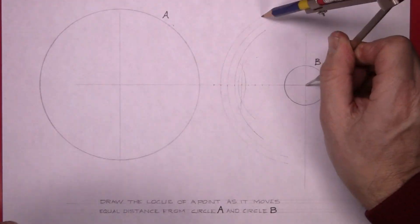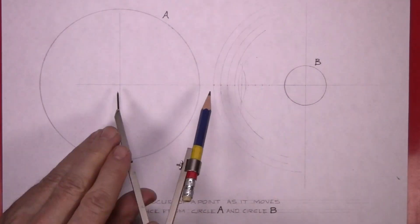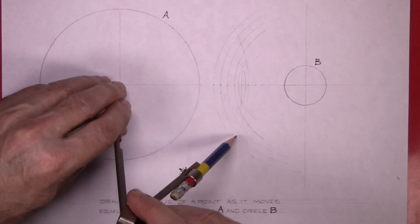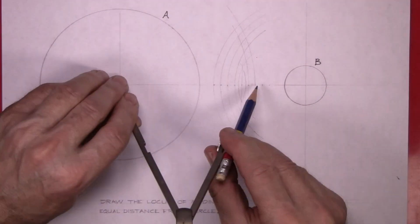Do the same with each of the points and then change over the center to the center of circle A and repeat the process.